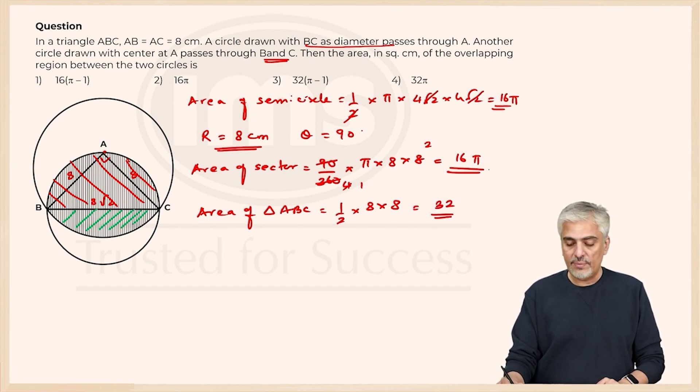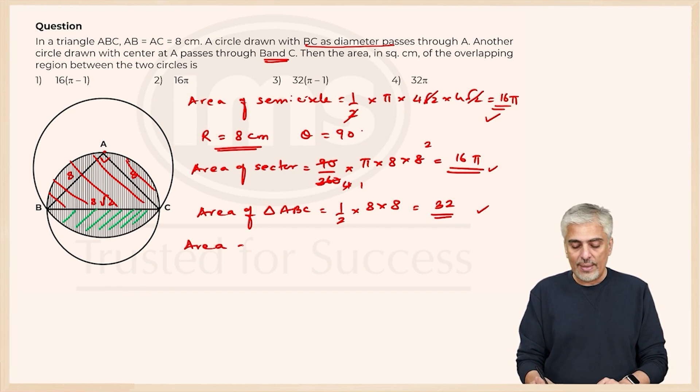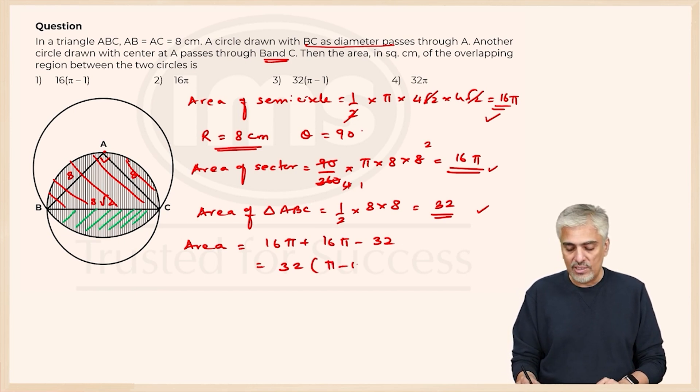So we have to subtract this minus this. So that will give you area of segment and we have to add the original 16 pi. So area overlapping, the answer which we want, will be 16 pi plus 16 pi minus 32. That will become 32 pi minus 32. 32 common, pi minus 1, which will be the third option.